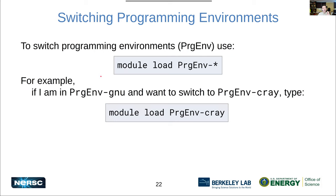Switching between programming environments is useful for testing and solving problems. It's straightforward — you don't need to use swap or unload. If you're in the GNU programming environment and want to switch to Cray, just type 'module load PrgEnv-cray' and you're there.